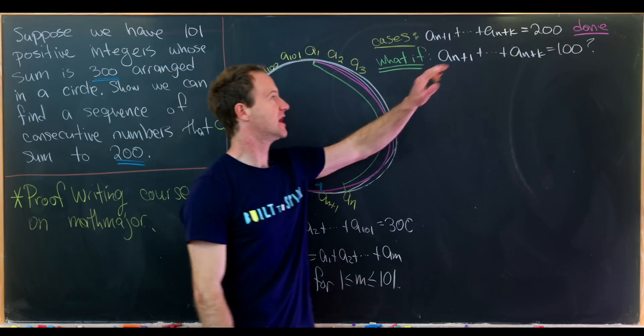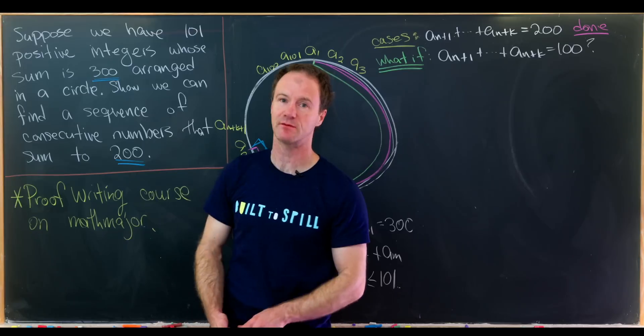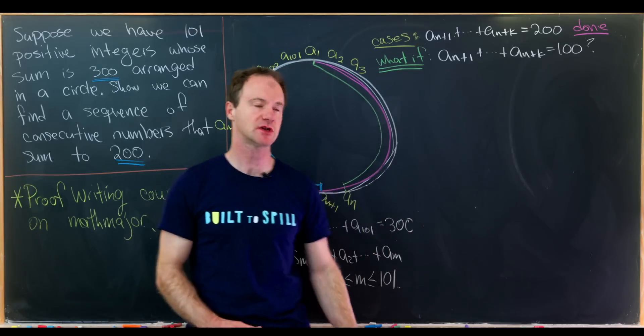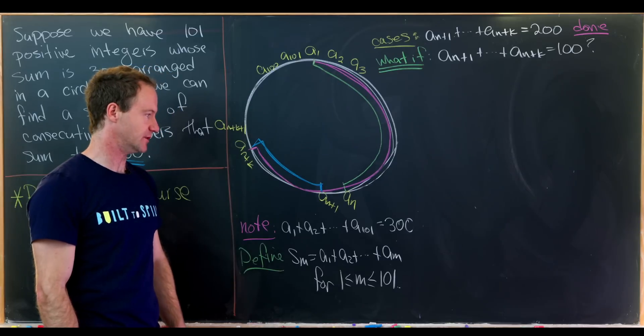So we just did some arguments and we determined that the sum from an plus 1 to an plus k could take on two values, either 200, in which case we're done because we have consecutive numbers that add up to our special amount, or they could be equal to 100, in which case there's a little bit of work to do.